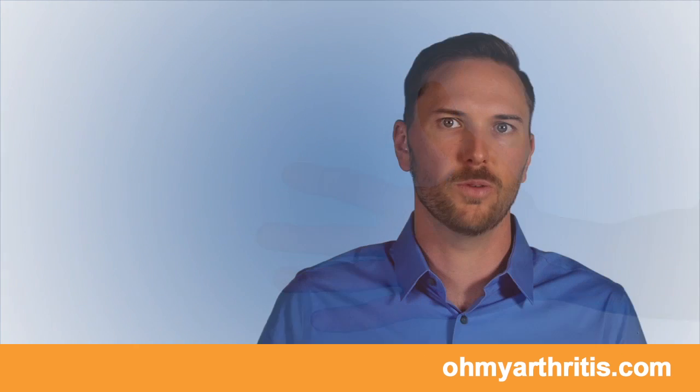Best treated early before the thumb gets stuck in a bent position, trigger thumb may be treated with a splint that limits or blocks the thumb from bending to allow it to rest.